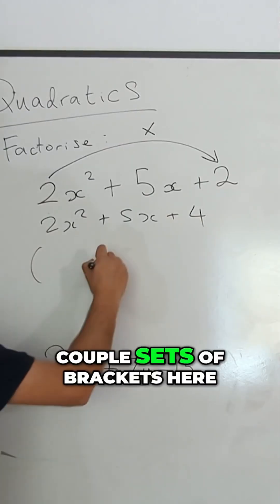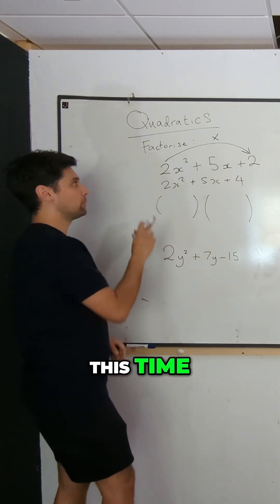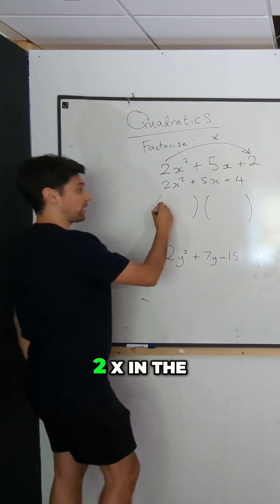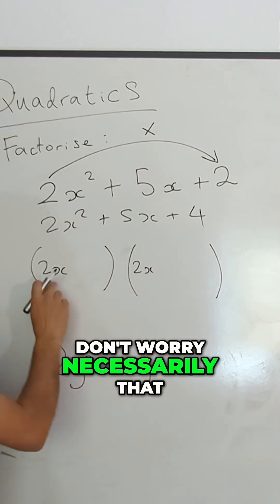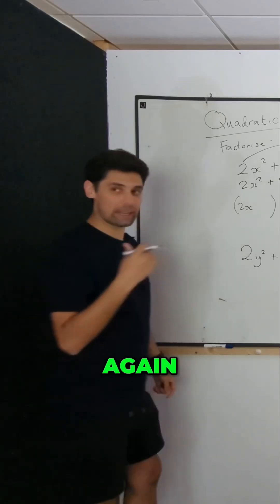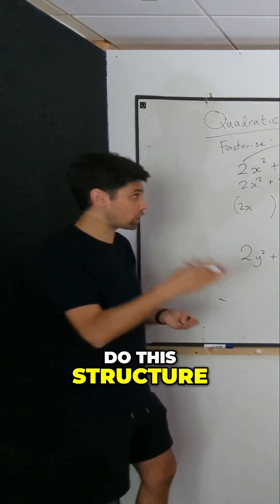A couple sets of brackets here. Now this time, remembering that we have this coefficient of x here, we're going to write 2x in the front of each. Now don't worry necessarily that that times that doesn't make that. Again, it's just a process, we just have to do this structure.